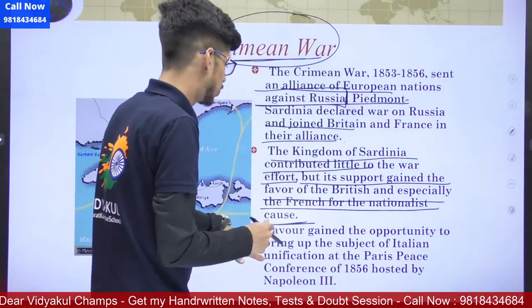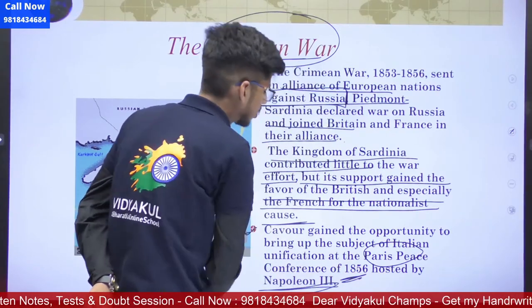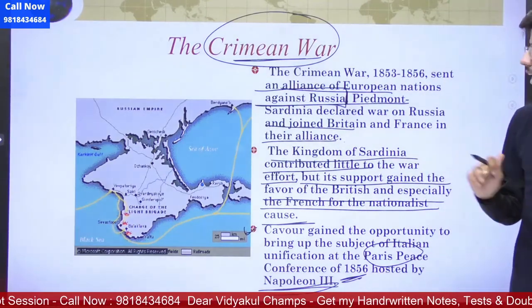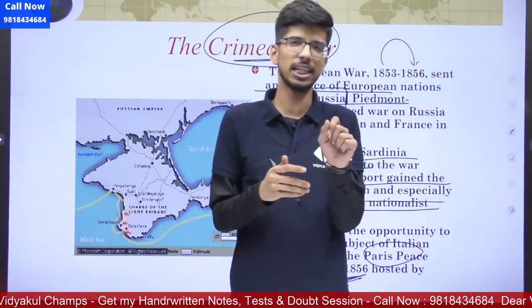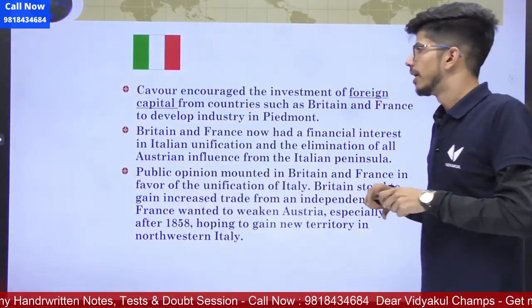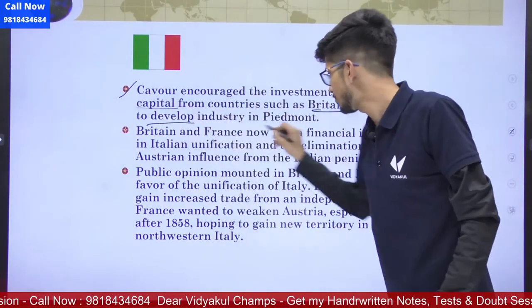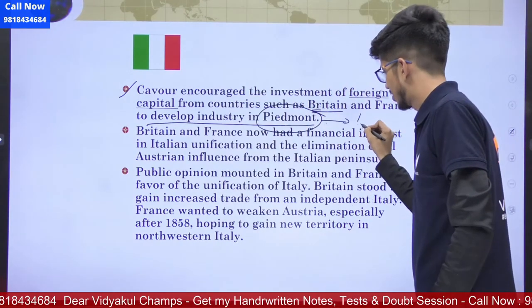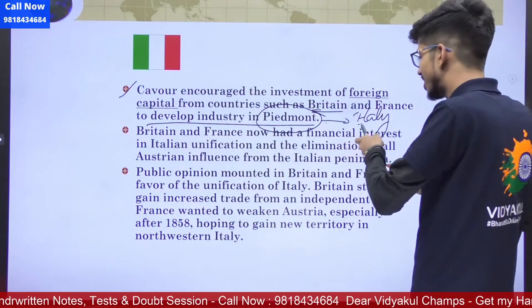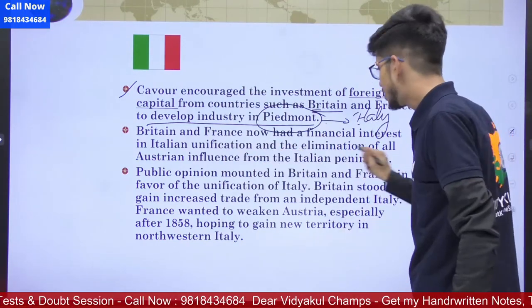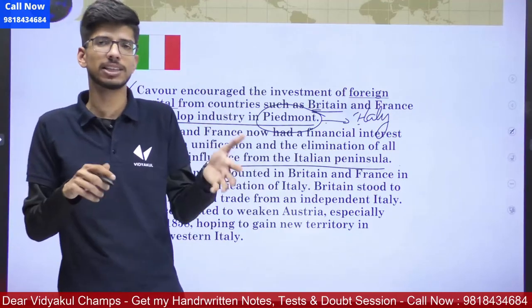Cavour gained the opportunity to bring up the subject of Italian unification at the Paris Peace Conference of 1856, hosted by Napoleon the Third. The war from 1853 to 1856 ended and the peace conference was held. Sardinia-Piedmont had contributed a little but went there with its prestige. At the Paris Peace Conference, Cavour encouraged the investment of foreign capital from countries such as Britain and France to develop industry in Piedmont — which indirectly meant Italy. Now Britain and France had a financial interest in Italian unification and the elimination of Austrian influence from the Italian peninsula.